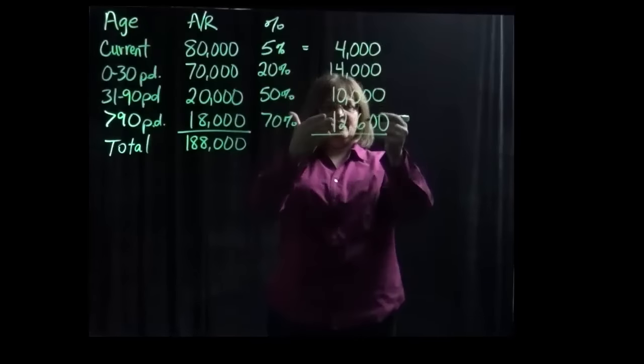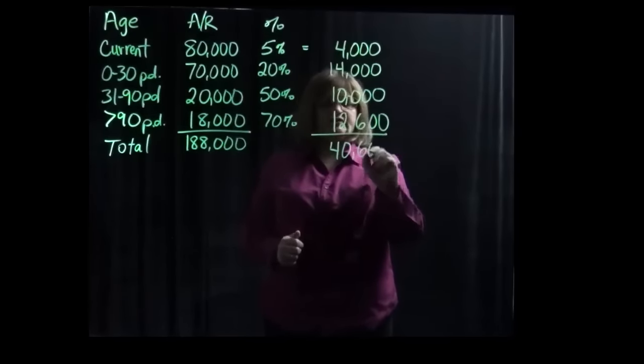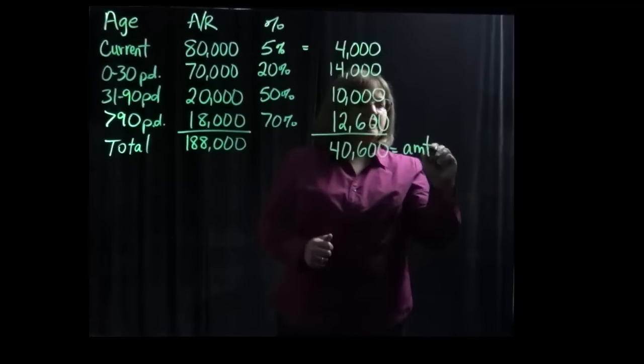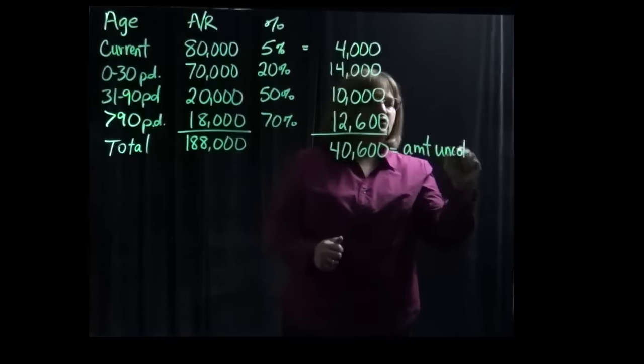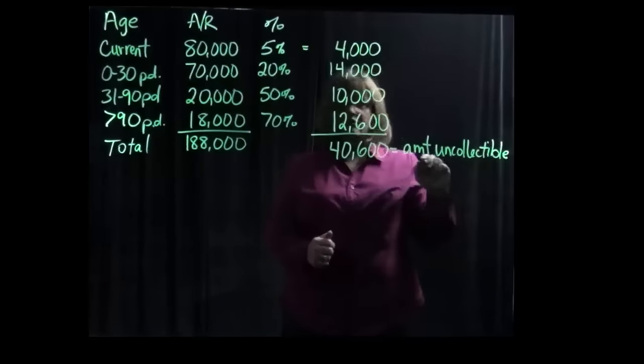If we then add these numbers together, they total to $40,600. This is the amount that is uncollectible. So this would be your answer to part one of this question.